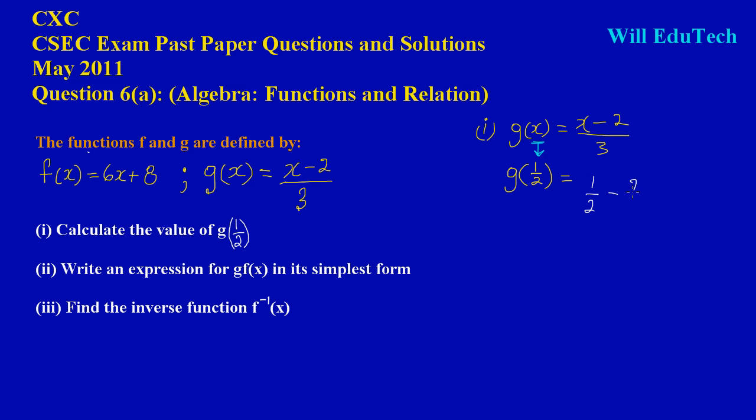(1/2) minus 2, all upon 3. I'm going to rewrite the statement another way to make it easier: open bracket 1/2 minus 2, close bracket, divided by 3.